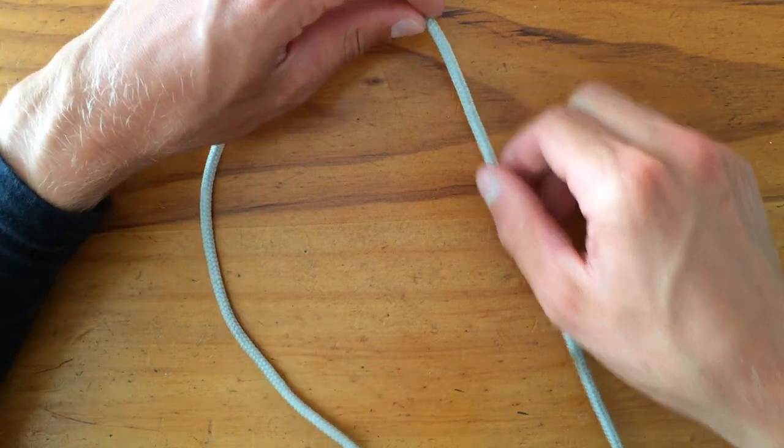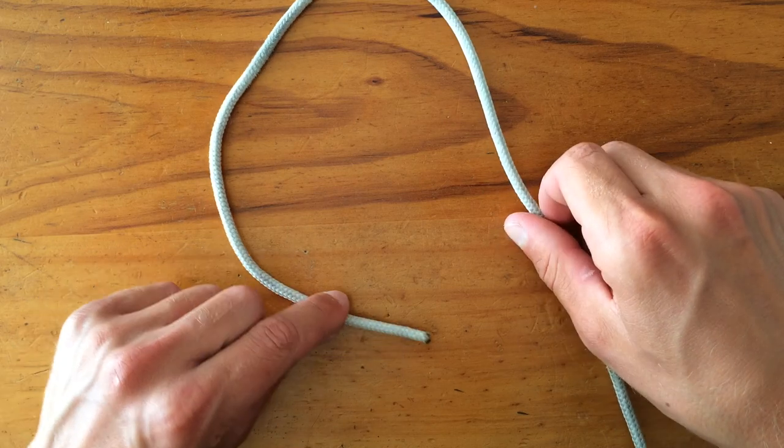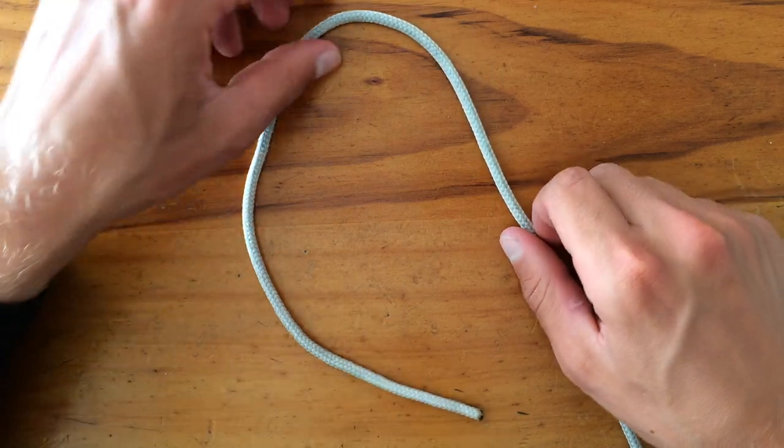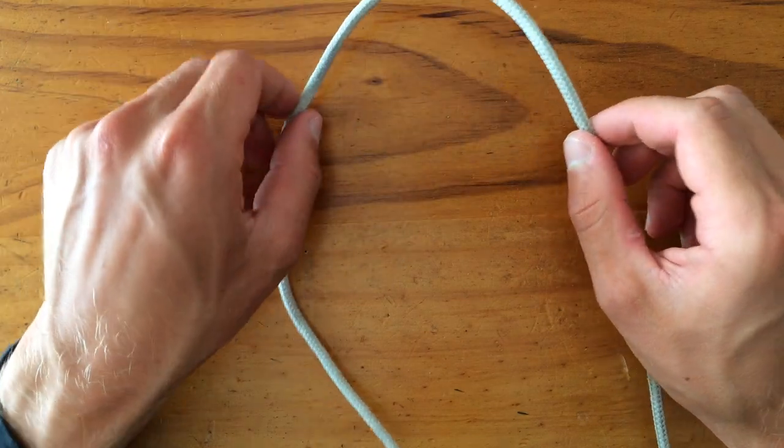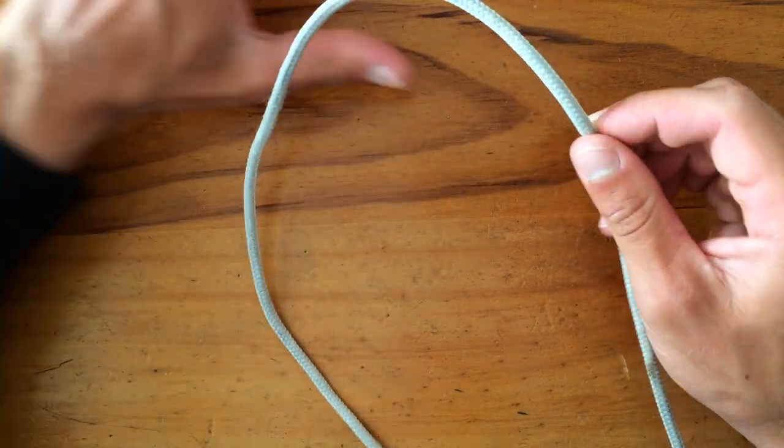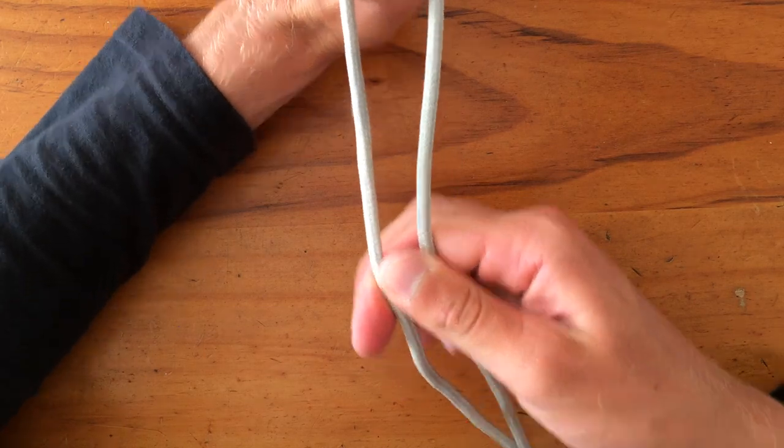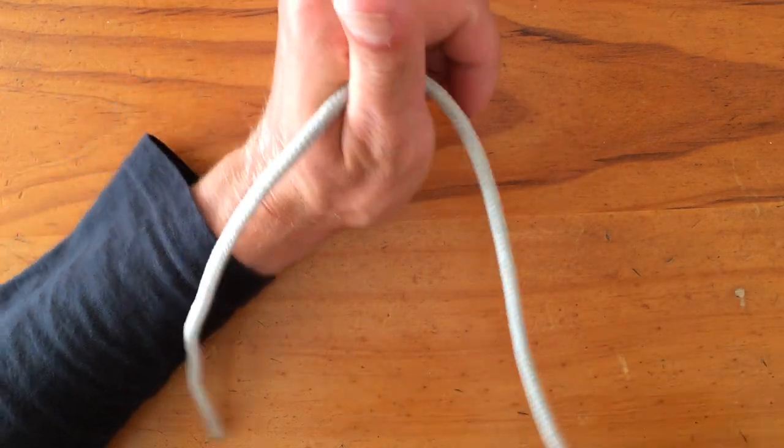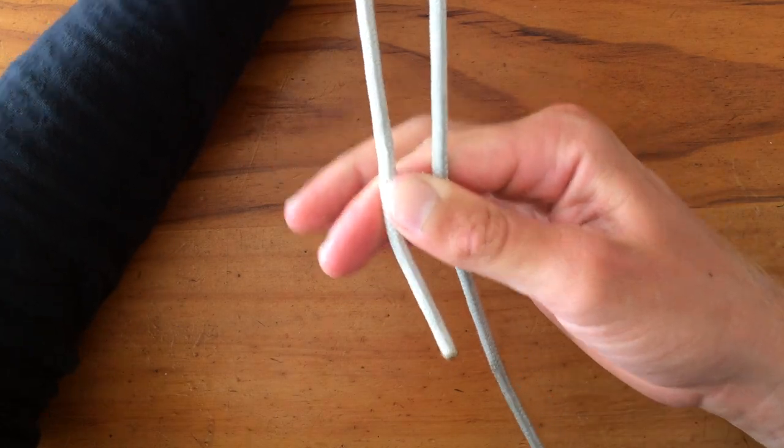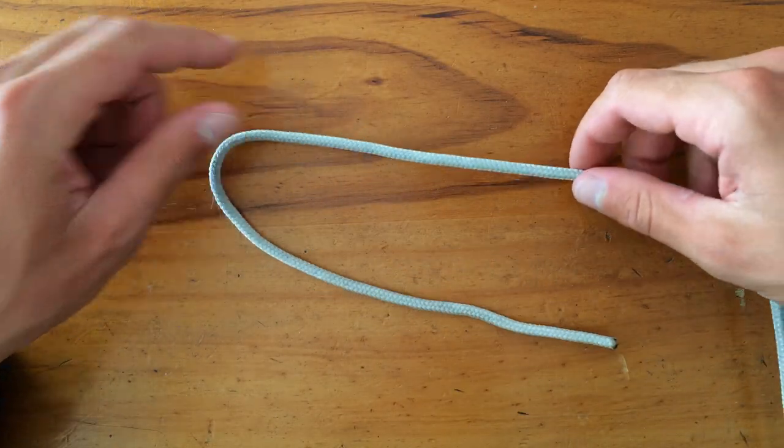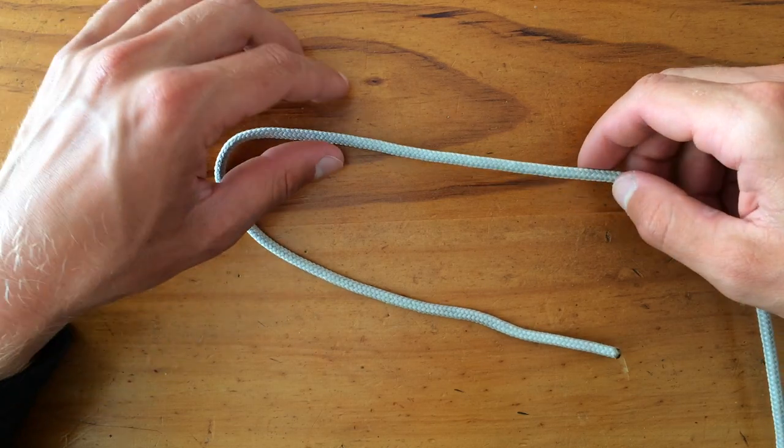You have your main line on this side and your tag end on this side. If you're tying that loop knot around something, you would put whatever you're tying it around here. If you're tying it like this, you'd be tying it over my thumb like that. This is where whatever you're tying goes.